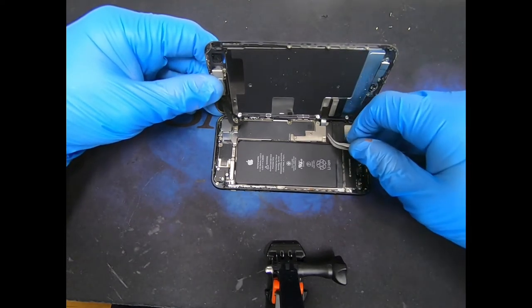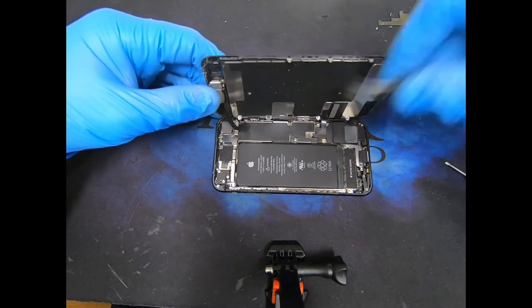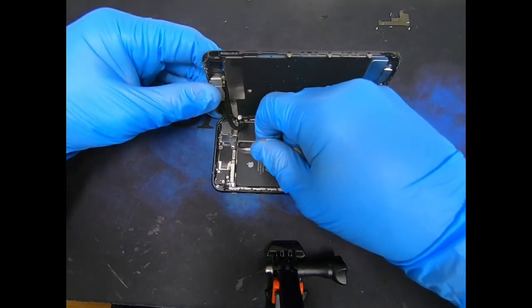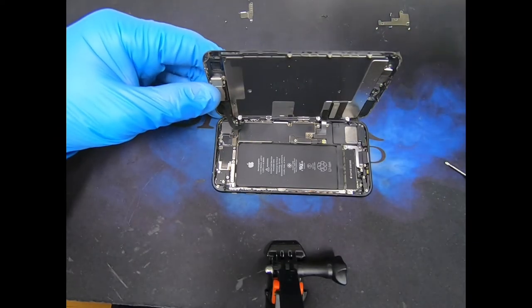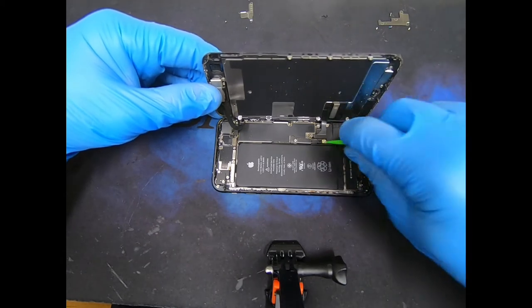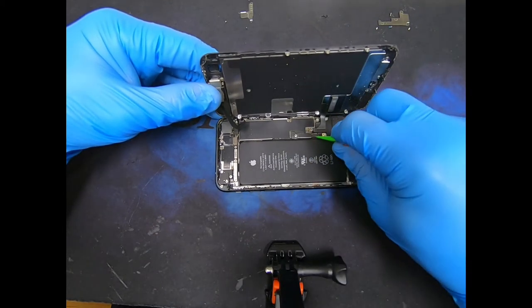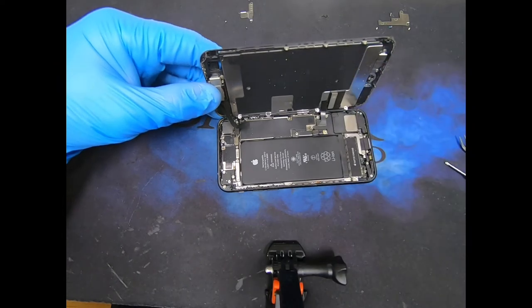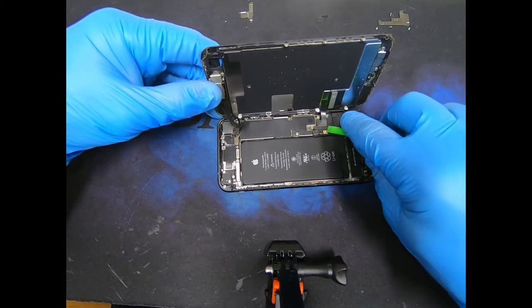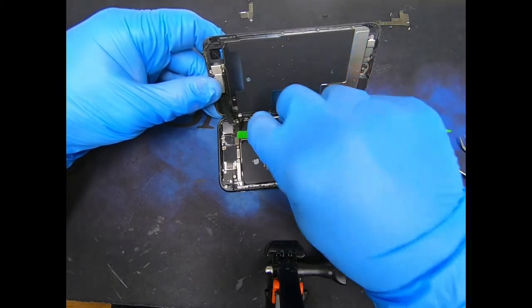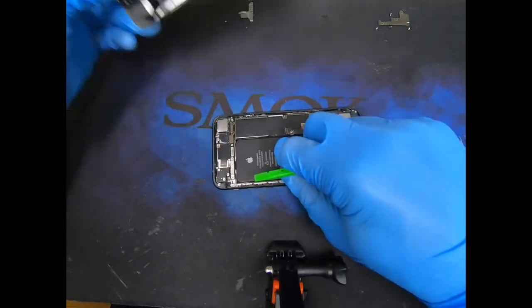Go ahead and remove the plate. Remove this plate. This is just like the iPhone 8, it's identical. Nothing different about it. I'm going to disconnect that battery, disconnect the screen, the earpiece speaker, and remove the screen.